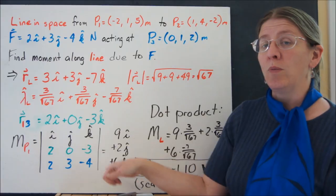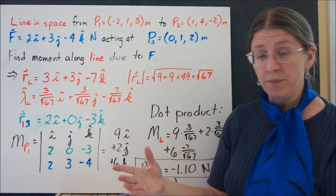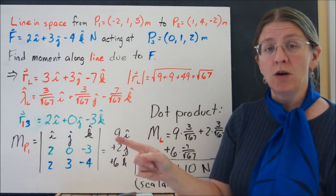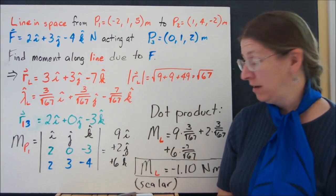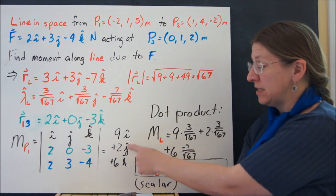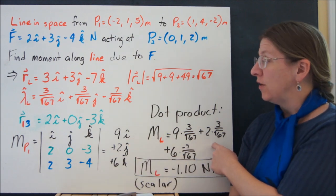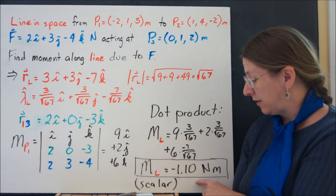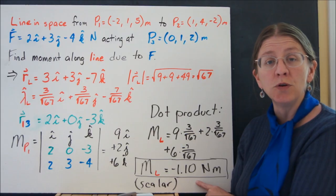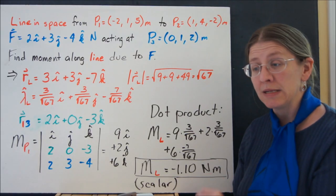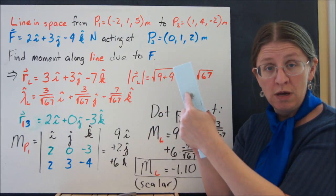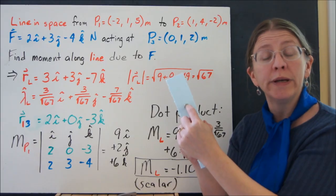That is the moment vector at that point. What I want to know is how much of it lies along that line. To do that, I take the dot product of this moment and the unit vector along the line. That dot product gives me negative 1.10 newton meters. That's a scalar because I already know the direction—the direction is along the line. What I want to know is how much moment I've got there.